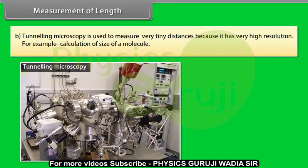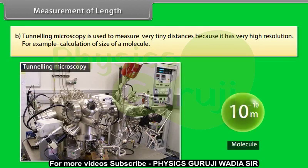Tunneling microscopy is used to measure very tiny distances because it has very high resolution, for example calculation of size of a molecule.